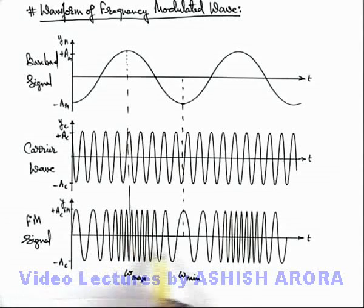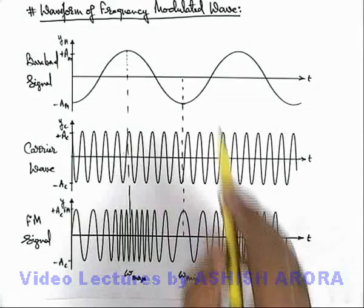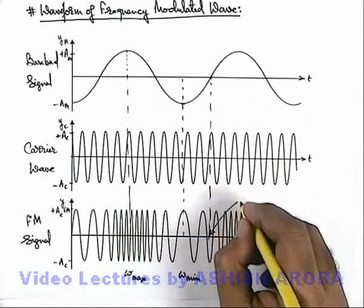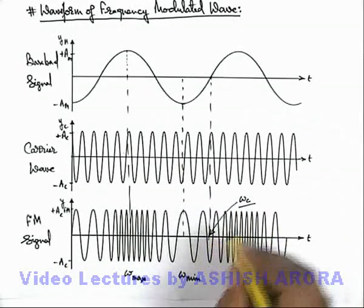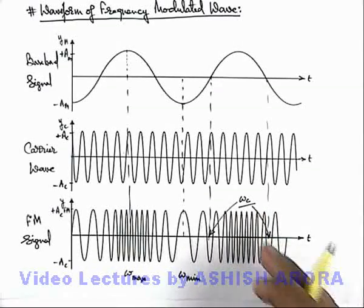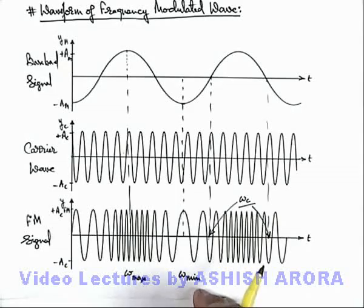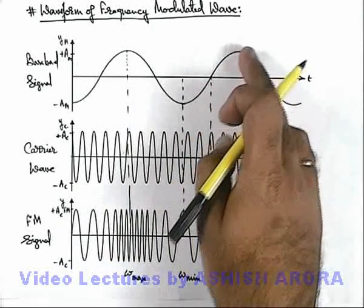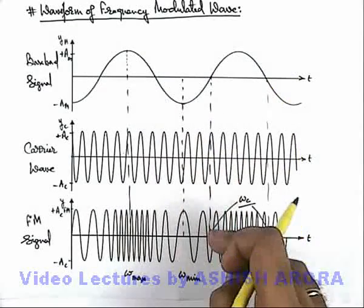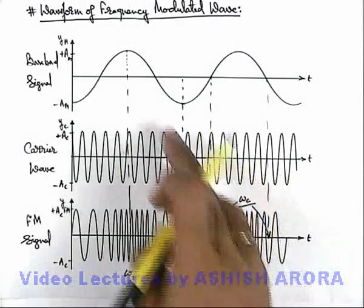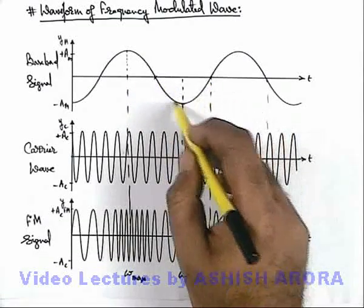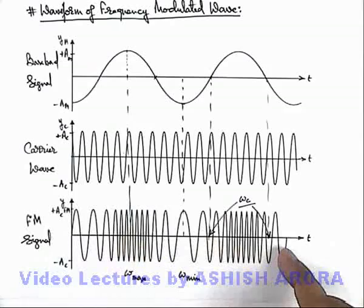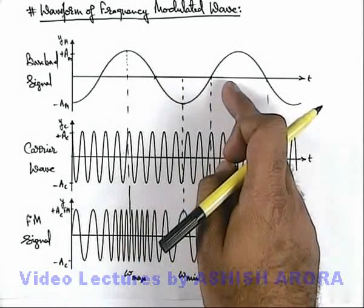The frequency continuously varies in the FM signal according to the information in the baseband signal. At the points where the displacement in the baseband signal is zero, the frequency of the FM signal equals the carrier frequency. Wherever the displacement of the baseband signal is positive, the frequency of the FM signal is higher than omega_c; wherever it is negative, the frequency is less than omega_c. The FM wave thus contains all the information of the baseband signal. The frequency of the FM signal varies very close to the carrier frequency, so the antenna size required for transmission is practically small, and since the average frequency is very high, it can be easily transmitted with sufficient radiation power.